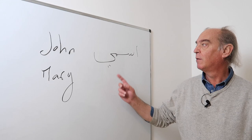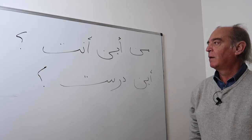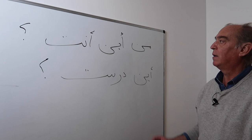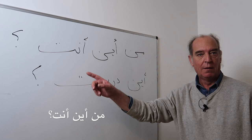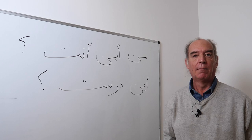The answer is very simple. You take the noun 'ism' and say it's me: 'Ismi John' if you're a man, or 'Ismi Mary' if you're a woman. A second question is 'Min aina anta?' — or 'Min aina anti?' for a woman. This means 'From where are you?'